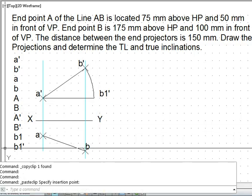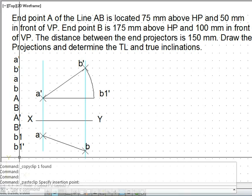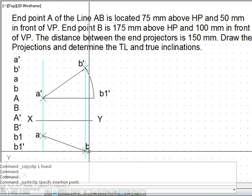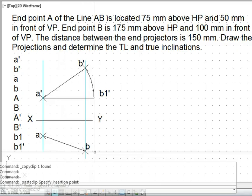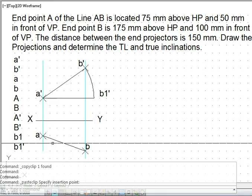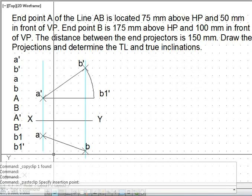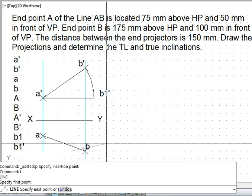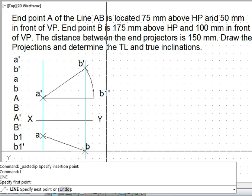The importance of this point B1 dash is it is in vertical alignment with capital B. Capital B is the true length, the endpoint of the true length in the top view. That point has another locus. One locus for that point is this one, a horizontal line or a line parallel to XY line passing through B. This is the horizontal locus of capital B.